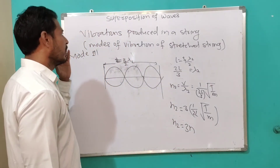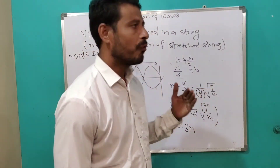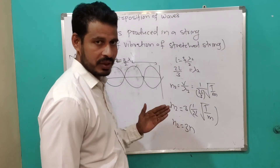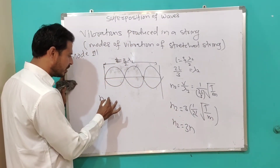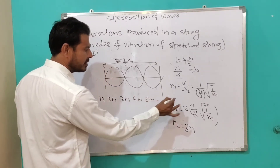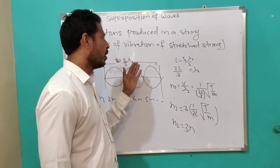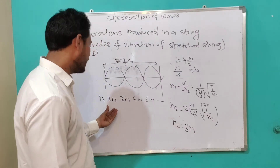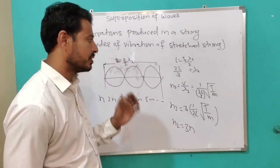This is about vibrations produced in a string, or the modes of vibration of a stressed string. We see that frequencies n, 2n, 3n, 4n, 5n... are all present — all harmonics are present in the vibration of a stressed string.